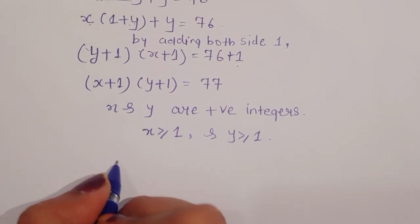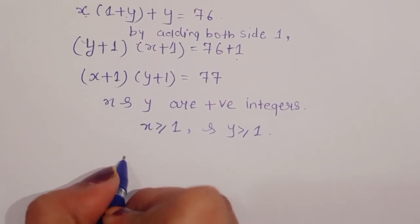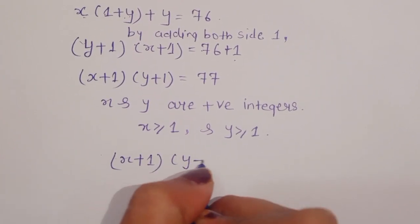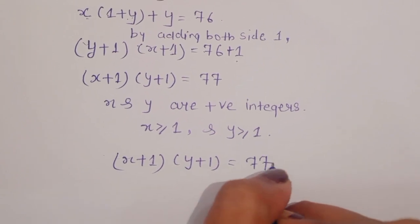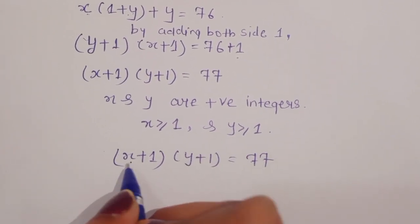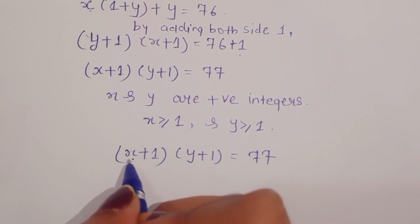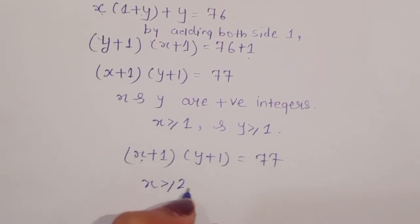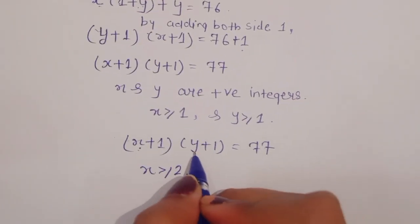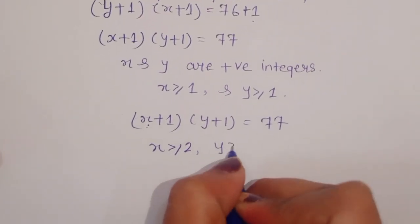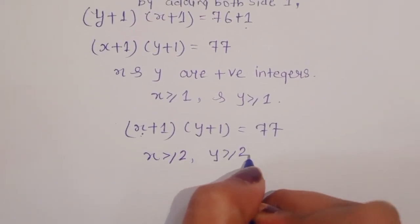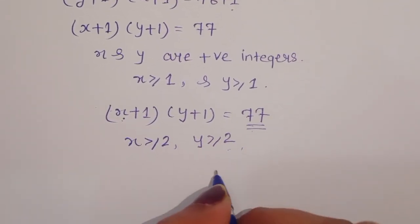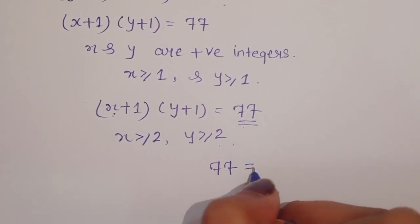Since x plus 1 times y plus 1 equals 77, if we take x equal to 1 then x plus 1 equals 2, so x plus 1 is greater than or equal to 2. Similarly, when y is at least 1, y plus 1 is greater than or equal to 2.